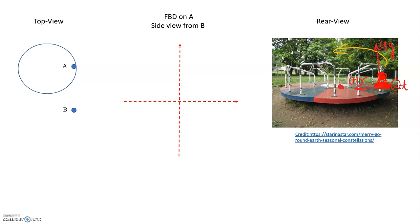We've defined our coordinate system, so now we can draw our free body diagram. This situation is not any different from the first one — we're just changing our viewpoint. The forces themselves don't change; only how we label them changes. It's the same physical situation. The upward direction is positive Y, and inward to the left is the positive R, or centripetal, direction.